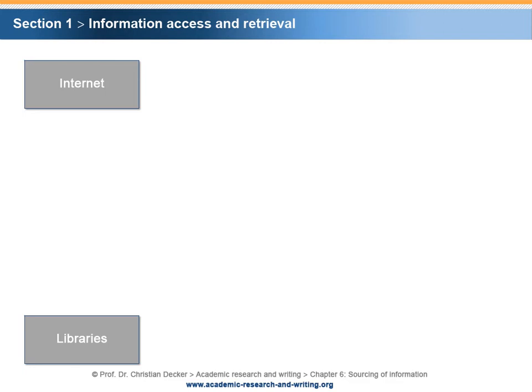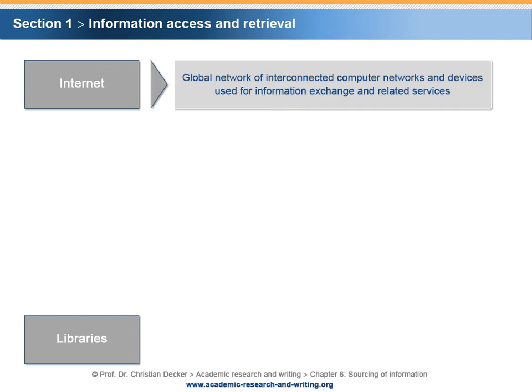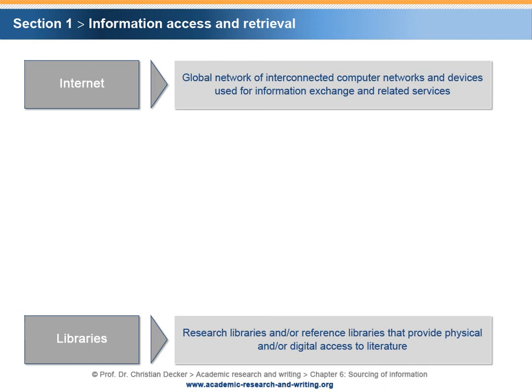The term Internet needs some clarification. It is often used as a synonym for the information accessed or distributed via the World Wide Web. However, the term Internet refers to a global network of interconnected computer networks and devices used for information exchange and related services. The term libraries refers to research libraries and/or reference libraries that provide physical and/or digital access to literature.